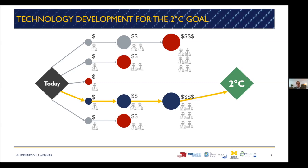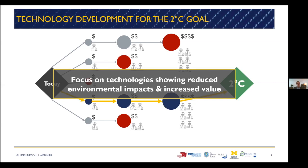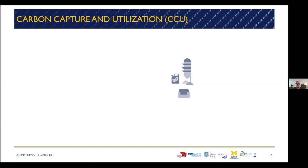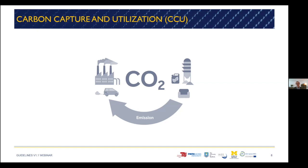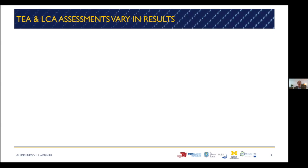We need to focus research efforts on technology pathways that show reduced environmental impact, but not only that — also increased value. One field of technologies to reach the two-degree target is carbon capture and utilization, CCU. Products that we consume every day create emissions, especially CO2 emissions. To close the cycle, CO2 emissions or CO2 from air can be captured and then reused to produce products. These CO2-based products can be chemicals, materials, or fuels — for example, methanol.